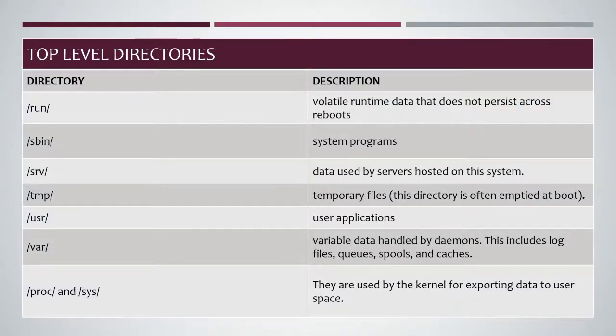Run — volatile runtime data that does not persist across reboots. Sbin — contains the system programs. SRV — data used by servers hosted on this system. TMP — for temporary files. This directory is often empty at boot — it's like the cache files, the cache in Windows terms. USR — user, contains user applications. Var — variable data handled by daemons, which includes log files, queues, spools, and cache. A daemon is a type of process in the Linux operating system, but we will discuss that in later chapters.